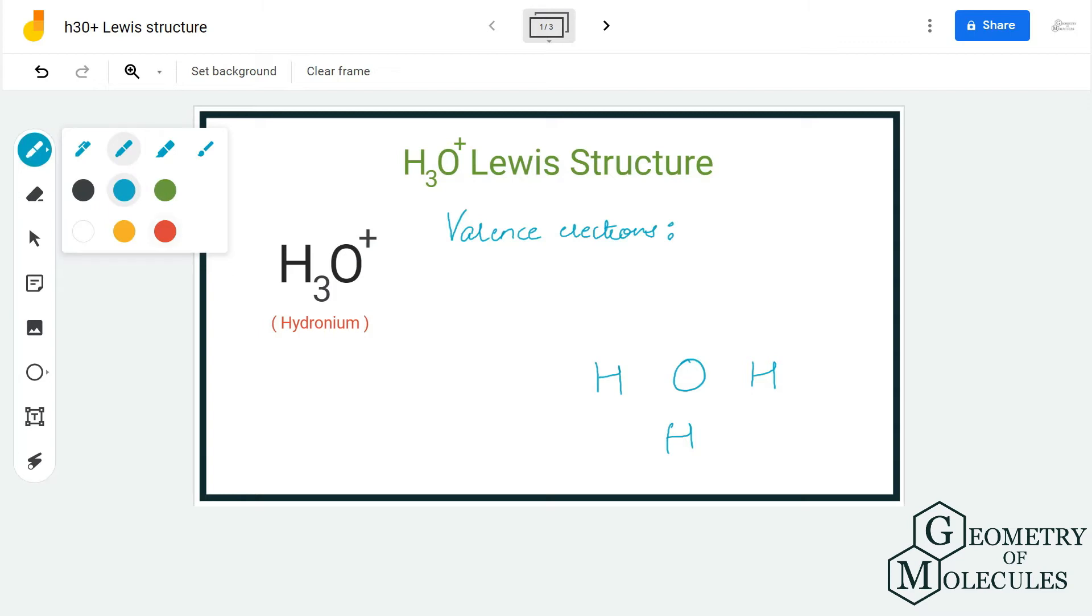To determine its Lewis structure, we are first going to look at the total number of valence electrons for this ion. Here we have three atoms of hydrogen, which means we have 1 into 3 equals 3, and we have one atom of oxygen, which means we have six valence electrons.